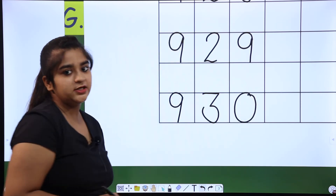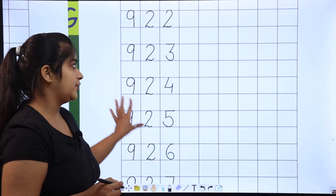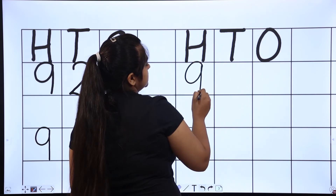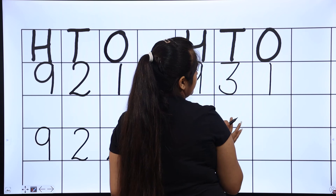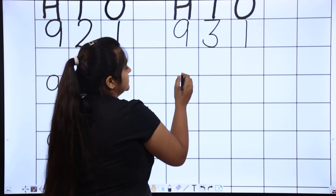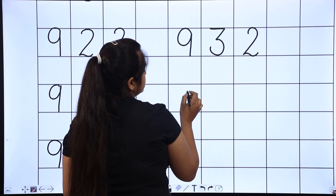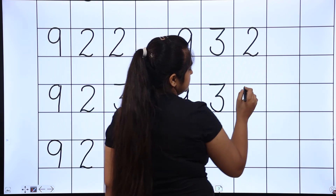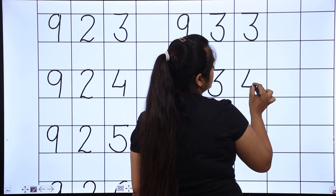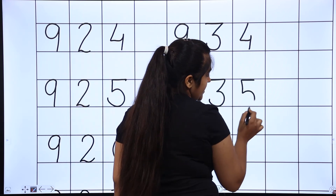Very good. After 929 comes 930, then 931. Like how after 30 comes 31, and after 10 comes 11 — same way. Okay? Next comes 932, 933, 934, 935.